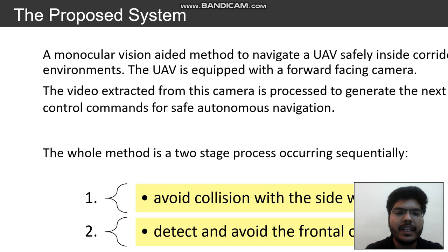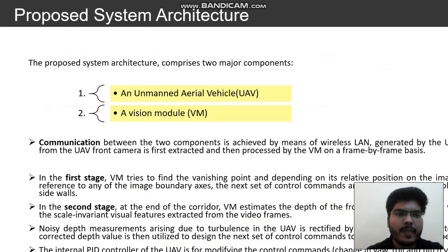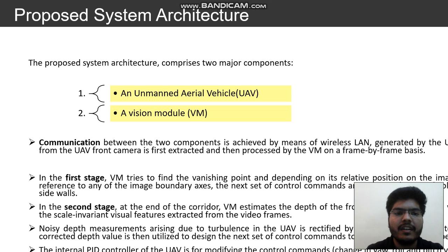The entire process is divided into two stages. The first is to avoid collisions with the side walls, and the second is to detect and avoid obstacles that come in front of the UAV. The proposed system architecture comprises two main components: the UAV itself and the vision module. Communication between the vision module and the UAV is achieved using a local area network and the ROS interface.